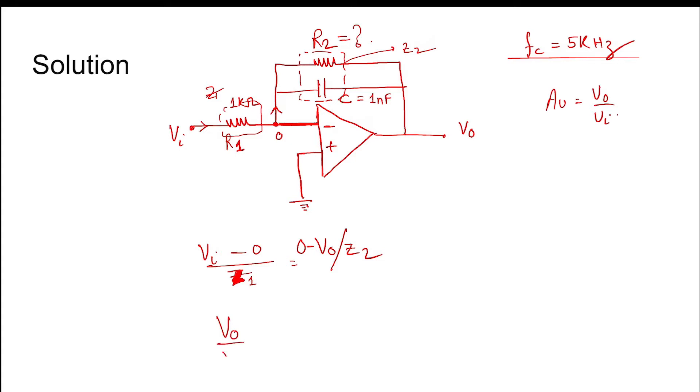So V0 by Vi equals minus Z2 by Z1. This is the gain of the op-amp, Av.